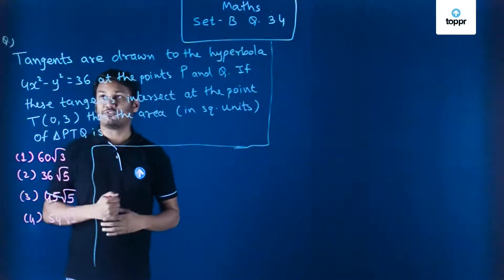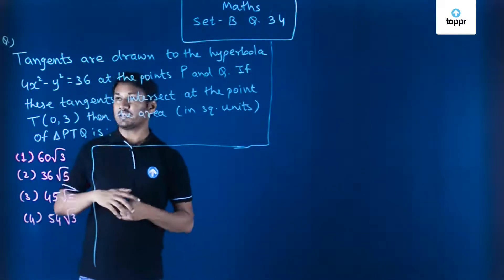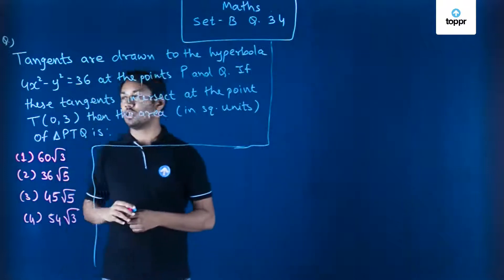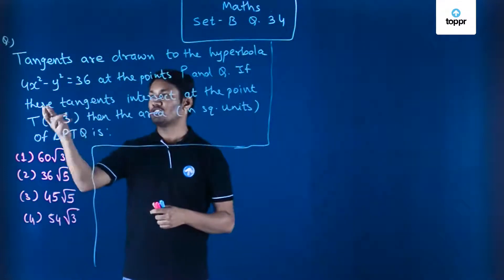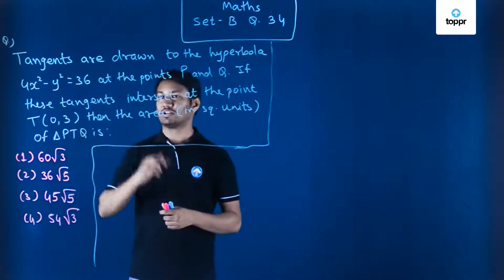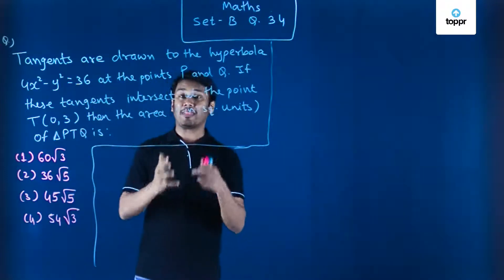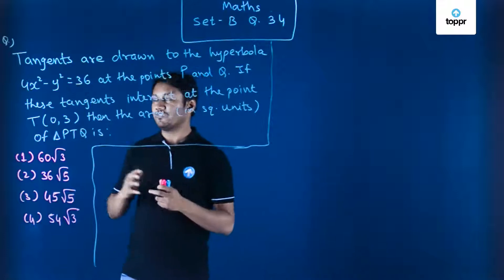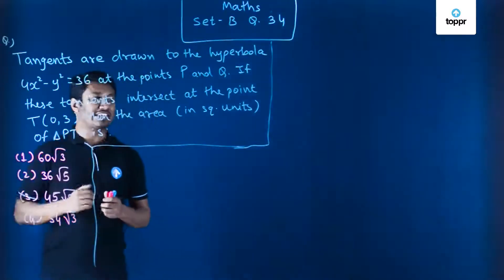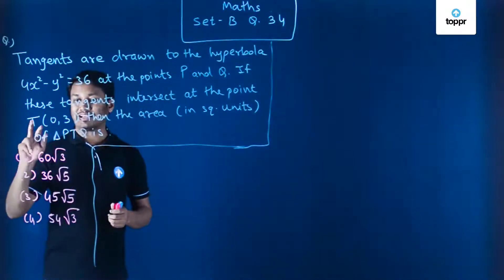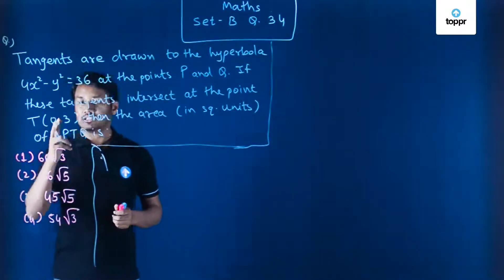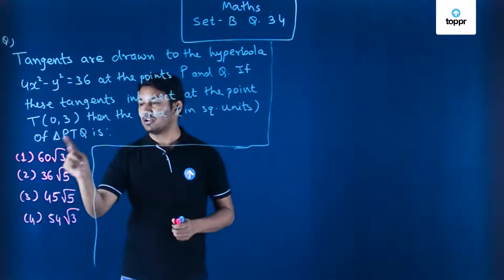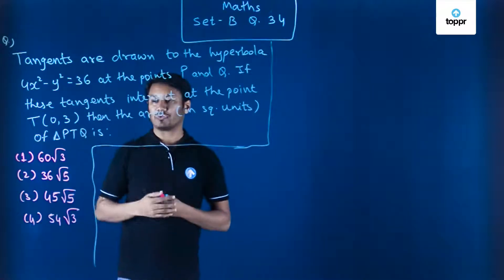Set B, question number 34. The question says tangents are drawn to the hyperbola 4x² minus y² equal to 36 at the points P and Q. If these tangents intersect at the point T, then find out the area of triangle PTQ.